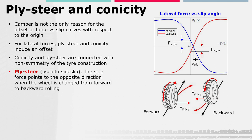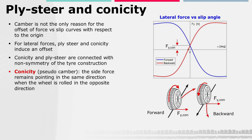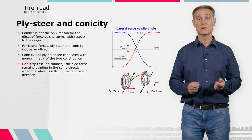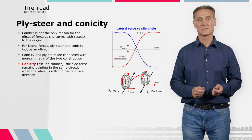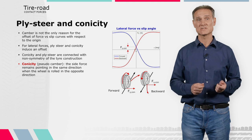That's why ply steer is sometimes referred to as a pseudo-slip angle. Ply steer causes the so-called dog-tracking of a vehicle, which is generally not discernible by the driver. On the other hand, if a tire shows pure conicity, the lateral force Fy-con remains pointing in the same direction when the wheel is rolled forward or backward, as it rolls like a truncated cone. This behavior is similar to that of a cambered tire, which explains the term pseudo-camber. Conicity is responsible for steering wheel pull — a torque at the hand wheel that is not only unwanted but can fatigue the driver. Notice that generally both conicity and ply steer are present on a tire.